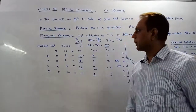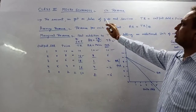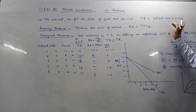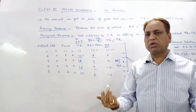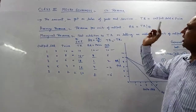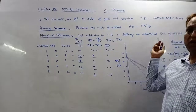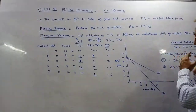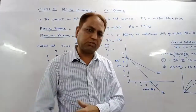For now, in this video we have understood what TR is — the amount we get on sales — and how to calculate it: output into price, i.e., output sold units into price gives TR. Then average revenue: TR per unit, i.e., TR divided by output sold. MR: net addition to TR on selling one additional unit of output. We understood this through the table and the relationship. If you have any query, you can ask — I'll make it clear. Thank you.